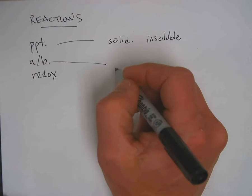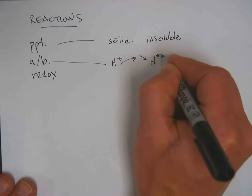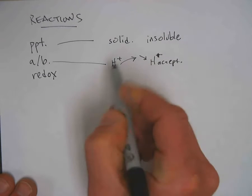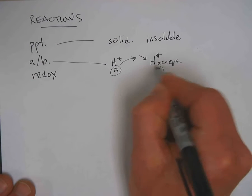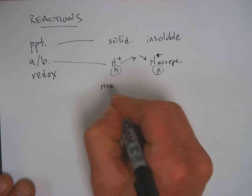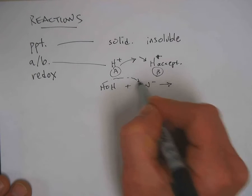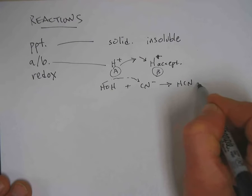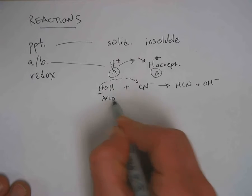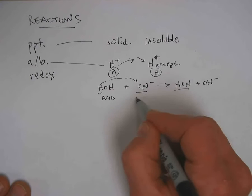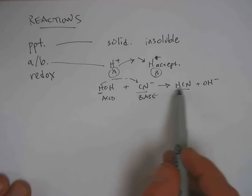The second type, acid-base reactions, are where a proton or H-plus is donated and an H-plus is accepted. The proton is donated and the proton is accepted. An acid, remember, is a proton donor and a base is a proton acceptor. For example, if we take water and react it with the cyanide ion, water will give away a hydrogen to the cyanide to make HCN and some OH-. You'll notice that water gave away a hydrogen, so it's classified as the acid. Cyanide accepted a hydrogen, so it's classified as the base. You should be able to identify what happens from one side of the reaction to the other.